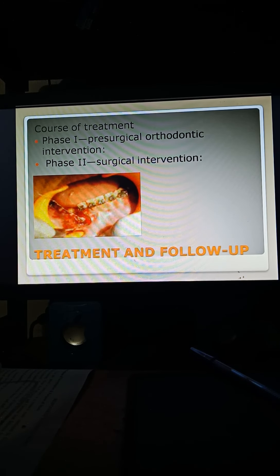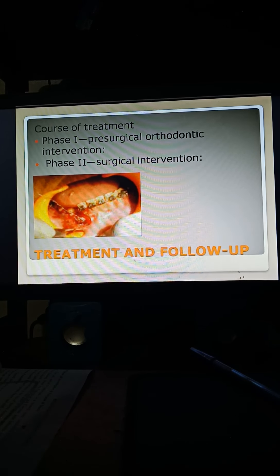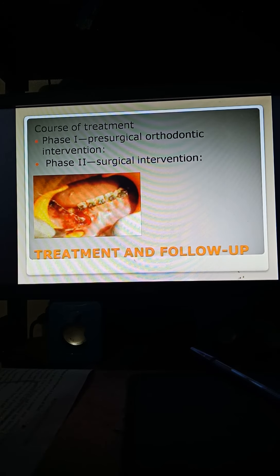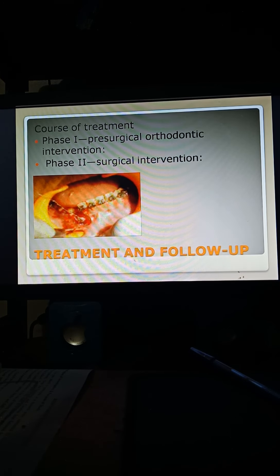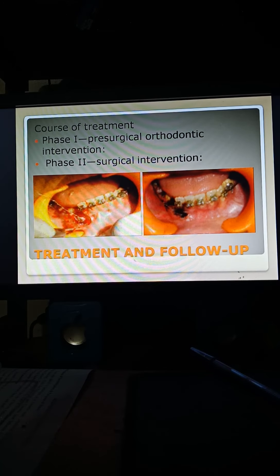Bleeding was controlled. A Begg's bracket was bonded on the labial aspect of the exposed tooth surface after achieving proper isolation from surrounding bleeding at the surgical site. A ligature wire was passed through the bracket, twisted, and attached around a nickel-titanium main wire. The flap was then replaced and sutured, and post-operative instructions were given.